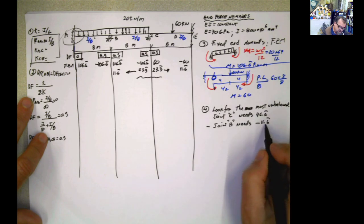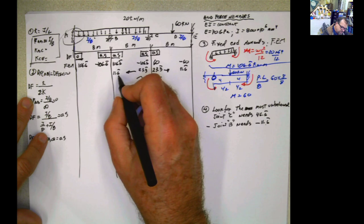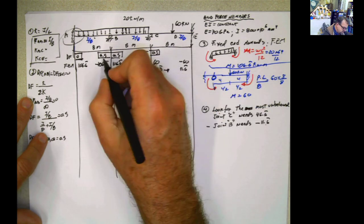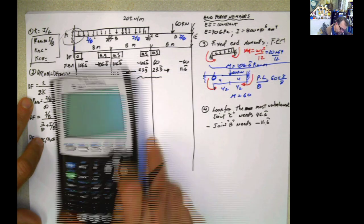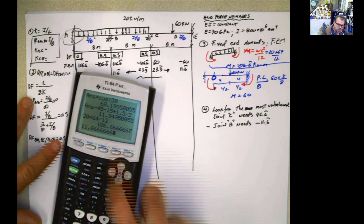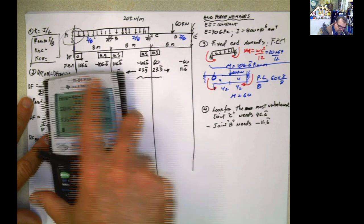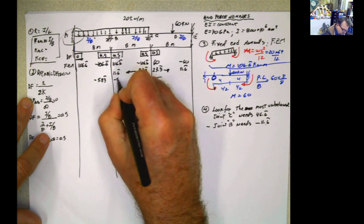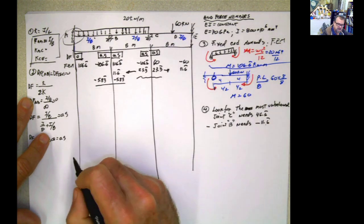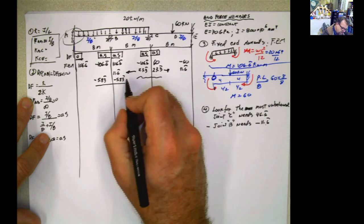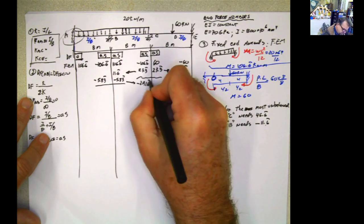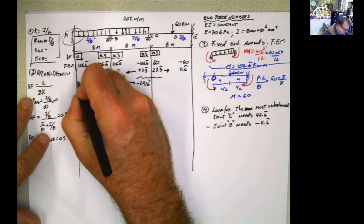Joint B needs a negative moment of 11.6, distributed according to the distribution factors. Negative 11.6 times 0.5 gives negative 5.83 on each side. This joint is now balanced. Half of 5.83 transfers to each far end, which is 2.916.